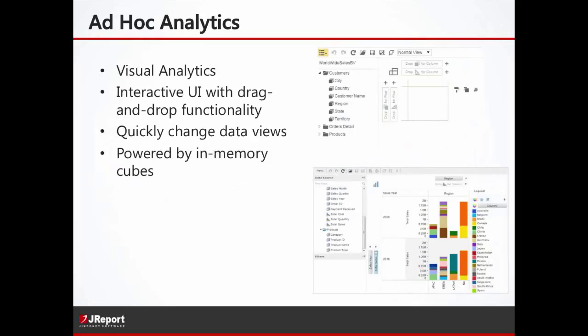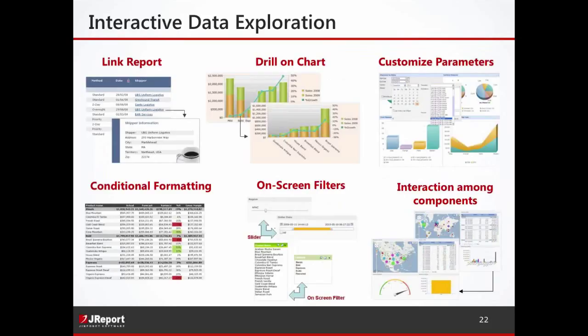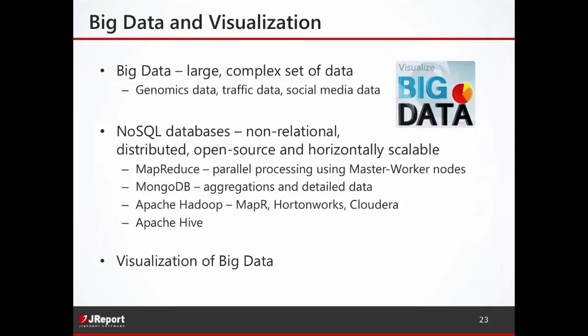The next product I want to highlight is J-Dashboard. This is an end-user-focused tool that lets you really easily build dashboards from scratch. You start with a blank canvas and drag in components — charts, tables, cross tabs, maps, widgets. Google Maps is supported, OpenStreetMap is supported. You just drag those in from an existing component library. It's all based on HTML5. There are a couple of ways to interact with the data: you can link dashboards and reports to other reports, drill into charts, customize parameters, do conditional formatting where if a certain value crosses a threshold you can change the color of that value, use on-screen filters, and set interactions between different components — so you can have a filter component filter across one or more components in the dashboard.